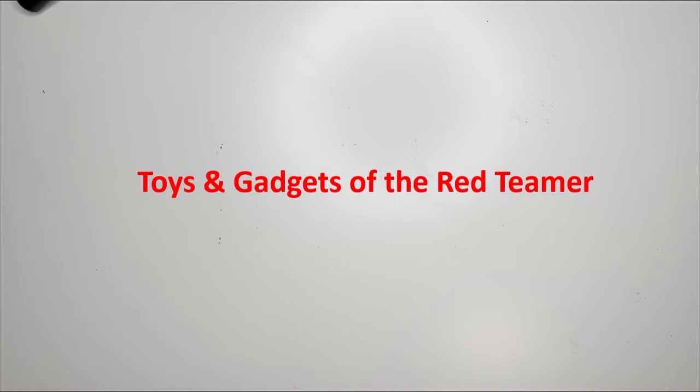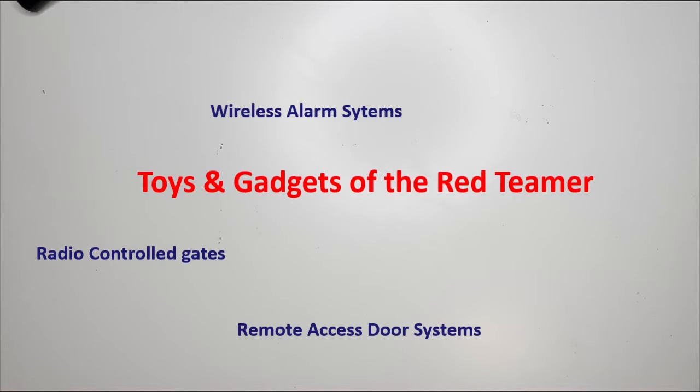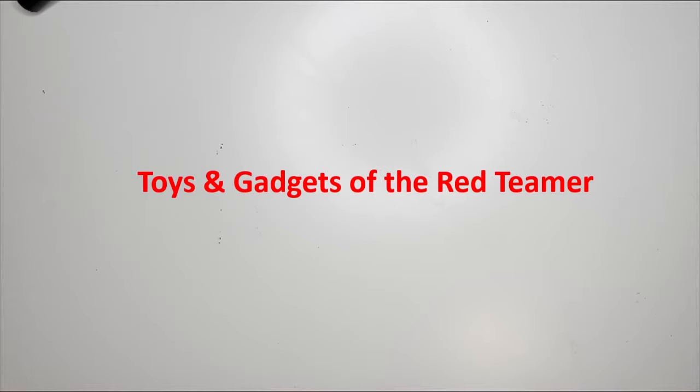Before we even get anywhere close to a premises, we often find that there's quite a lot of information passing over the air. I'm not talking about your Wi-Fi 2.4 or 5 gigahertz technology. We're talking about radio frequency devices - things like remote operated gates, alarm systems, certain doors could be activated by a key fob.